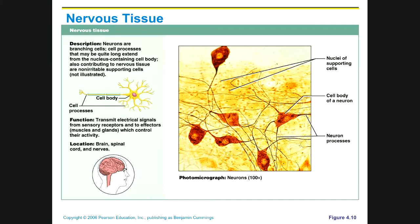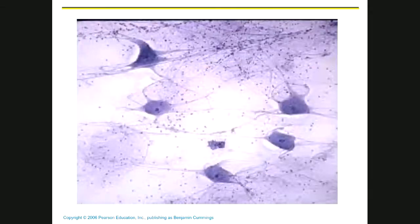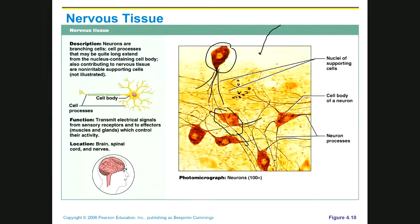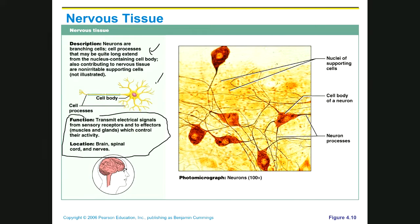When you look at it, we have a photomicrograph, and here's our photomicrograph. When you look at different types of cells, we're going to see these really, really big cells that have all these little things sticking off of them. There are going to be two different types of cells in nervous tissue. Here's our photomicrograph, the description, and our picture of the functions and locations. Everything you need to know about this tissue is right here in this box.